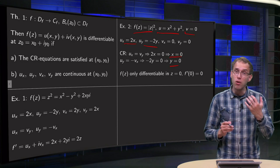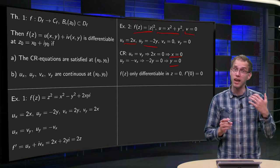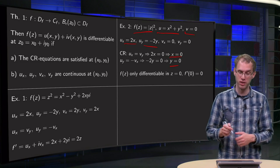So the only point where Cauchy-Riemann equations are satisfied is x equals y equals 0. So only in the origin Cauchy-Riemann equations are satisfied.